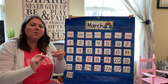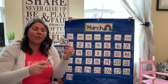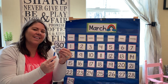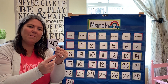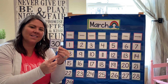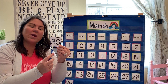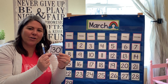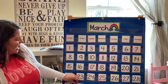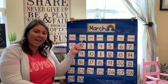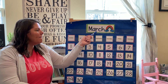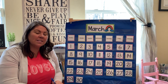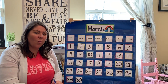What two numbers make the number 30? What number is this? 3, right. And what number is this? 0, right. A 3 and a 0 together make 30. So today is Monday, March 30th, 2020.